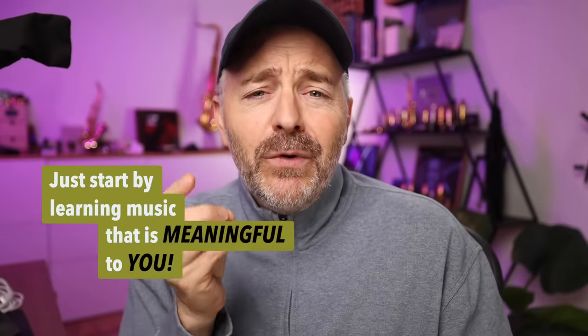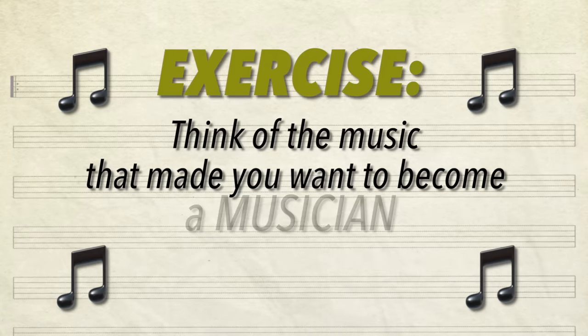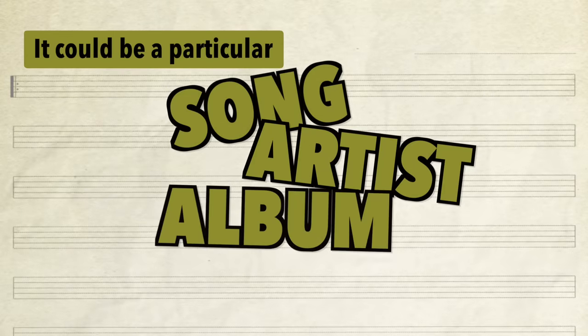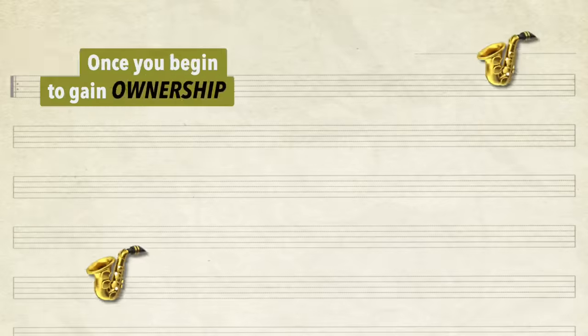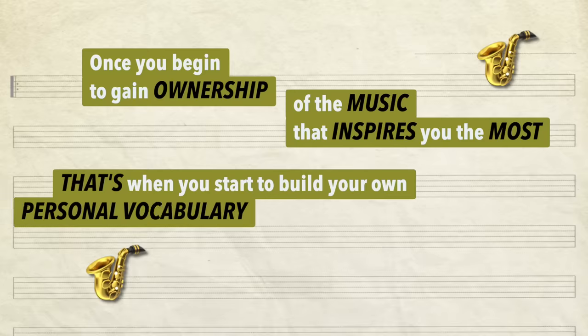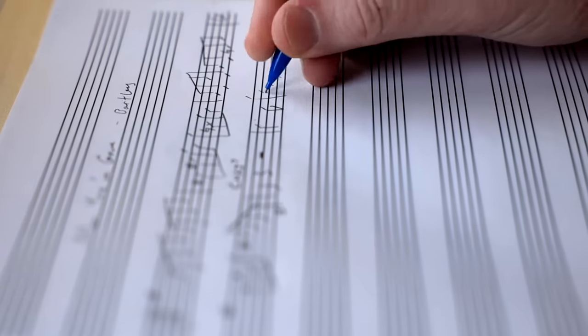This musical vocabulary can come from anywhere you choose — just start by learning music that is meaningful to you. Here's an exercise everyone should do starting today: think of the music that made you want to become a musician. It could be a particular song, an artist, a whole album, or even the theme song to your favorite TV show. Go find that recording and start learning that music by ear. It might take you an hour, a day, a week, a month — doesn't matter. Once you learn that music by ear, you gain ownership of it. It's like when you learn new words in a spoken language — you have to use those in real life situations in order to gain ownership of those new words and add them to your vocabulary. This is precisely why improvising musicians all transcribe solos from their favorite musicians.